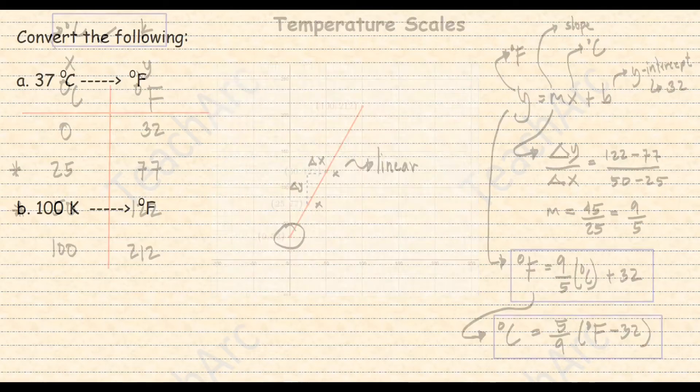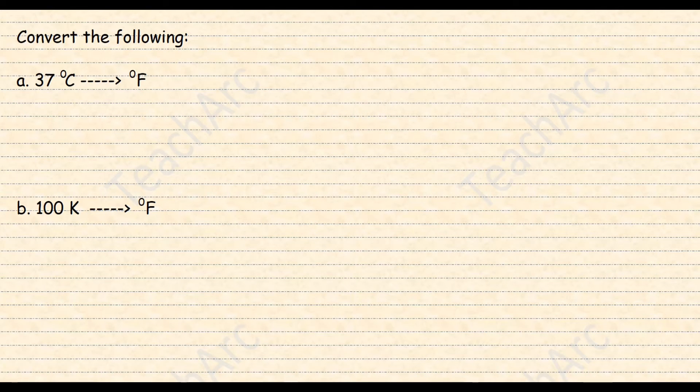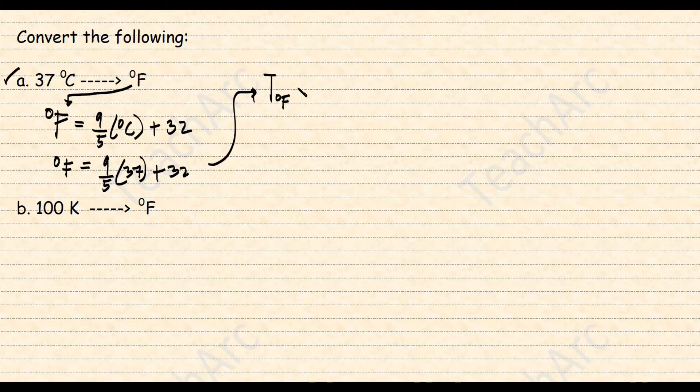As for conversion examples, let's look at these two questions. Let's start with the first one. Convert 37 degrees Celsius to degrees Fahrenheit. The temperature in degrees Fahrenheit is equal to 9 over 5 times the given degrees Celsius which is 37 plus 32. And yeah, 37 degrees Celsius is equal to 98.6 degrees Fahrenheit.